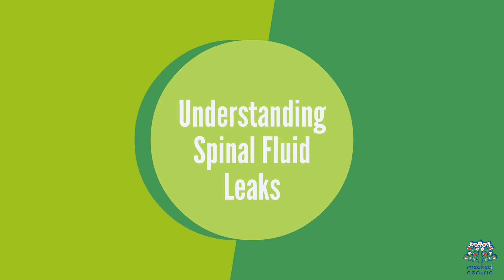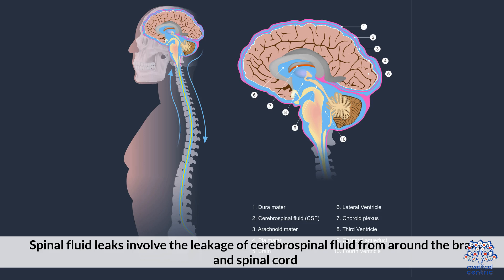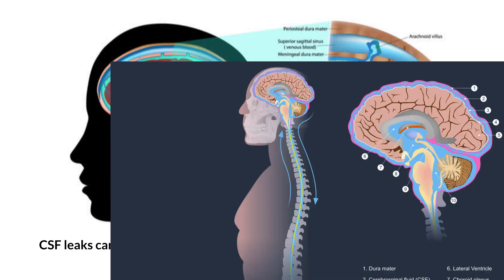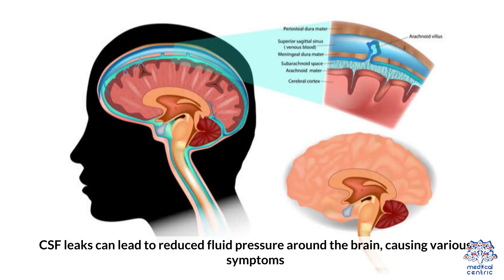1. Understanding Spinal Fluid Leaks. Spinal fluid leaks involve the leakage of cerebrospinal fluid from around the brain and spinal cord. CSF leaks can lead to reduced fluid pressure around the brain, causing various symptoms.